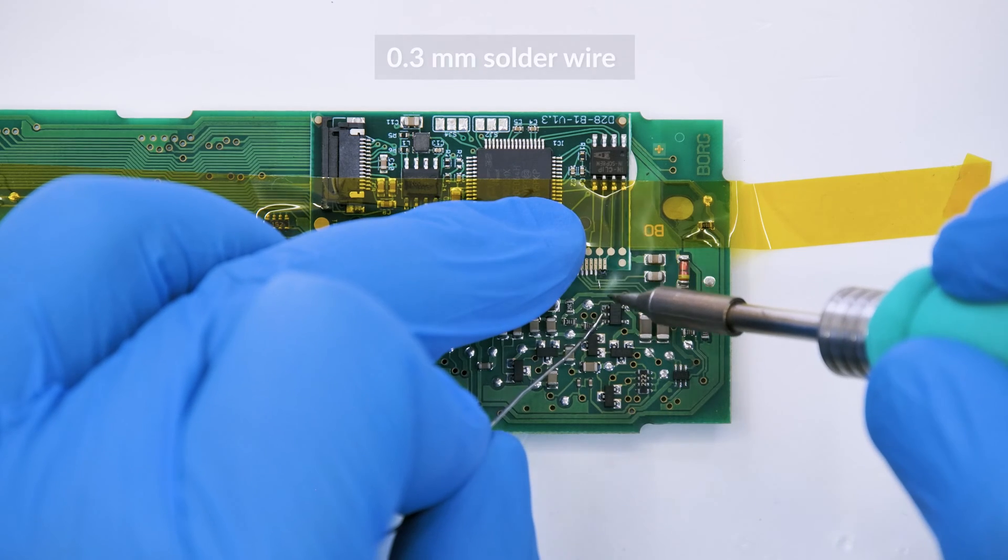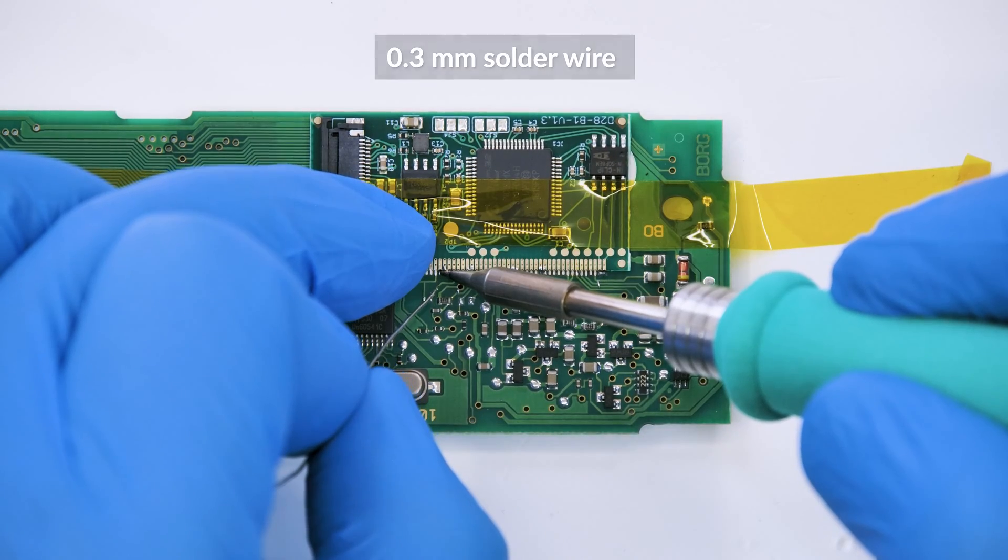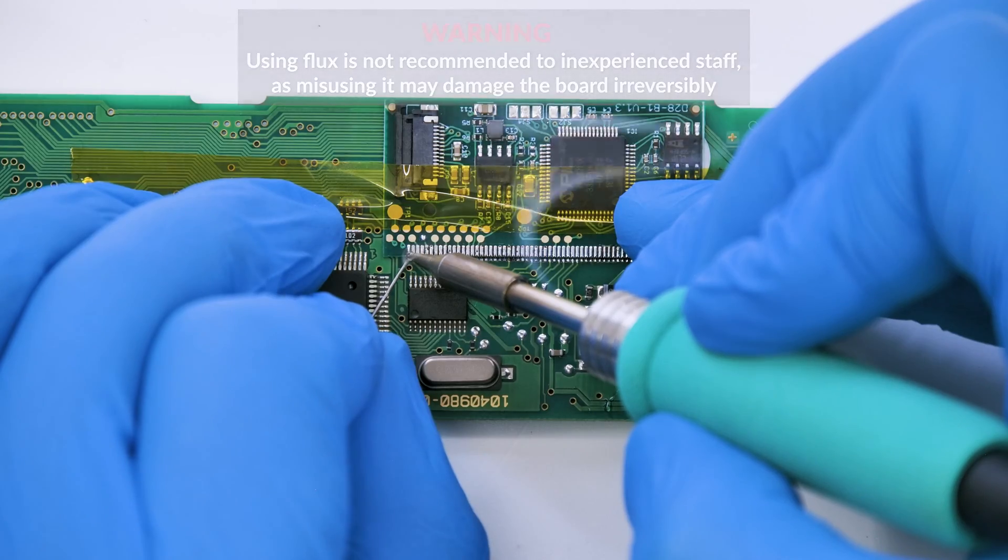With the soldering iron with conical tip at 350 degrees solder the small PCB on some points to fix it on the board. Then solder each pin individually.